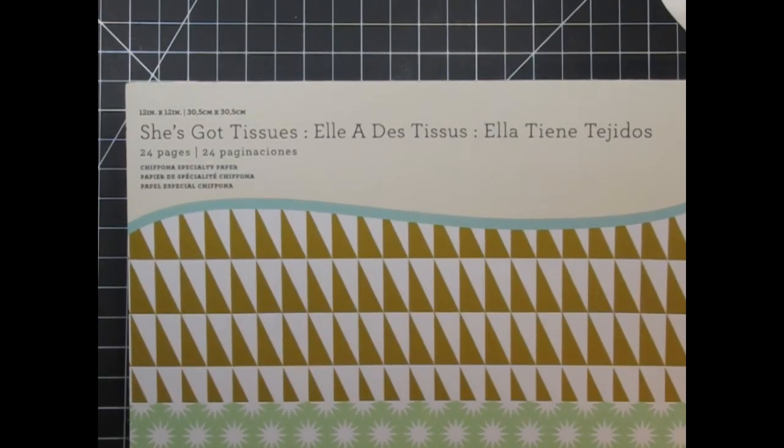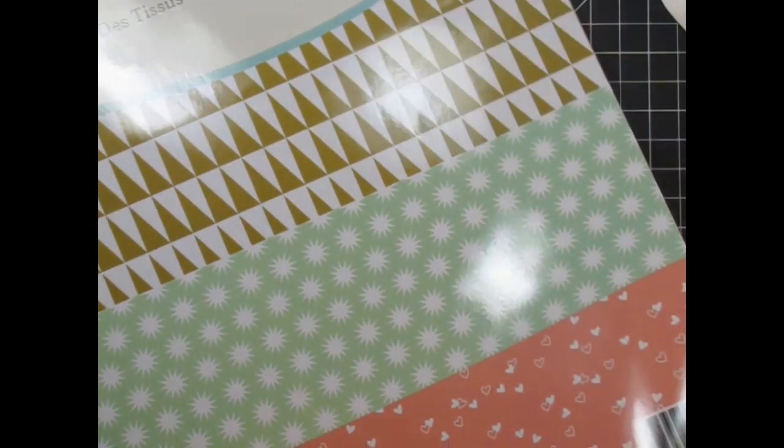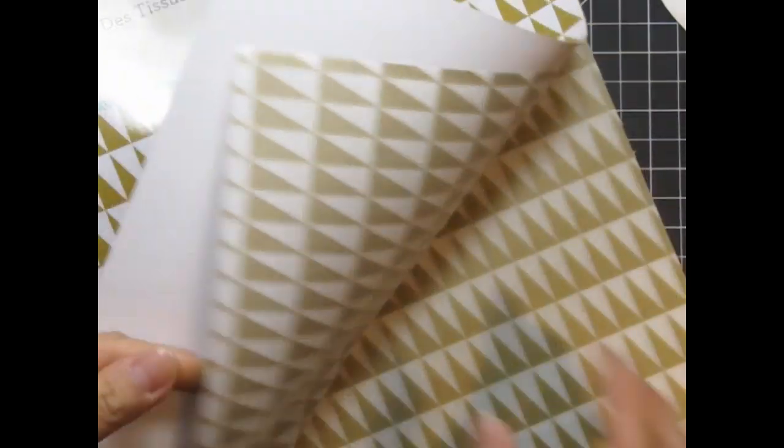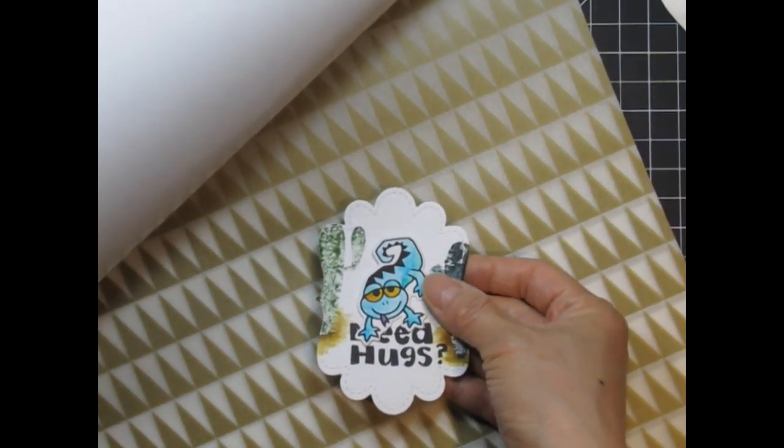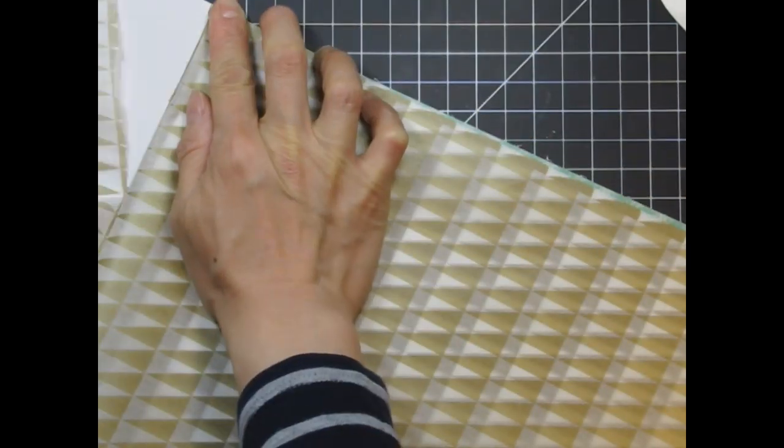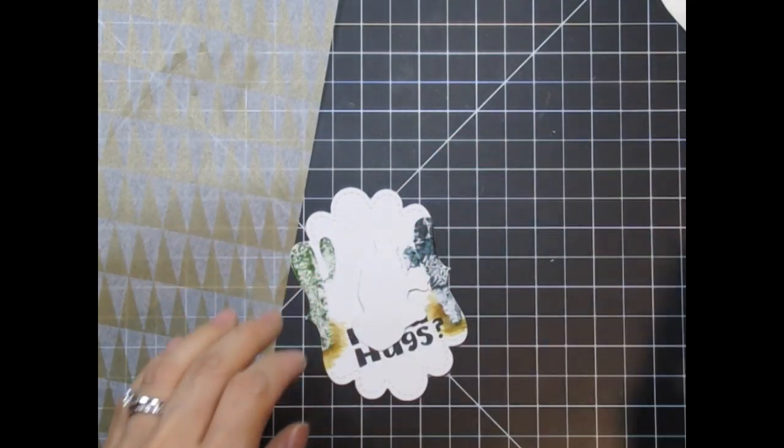Before assembling the card, I want to add a layer of interest between the card base and the Frame 1 die panel. I recently bought these new tissues by Cosmo Cricket. They are to die for. I love light materials like vellum, crepe, and now patterned tissues. I absolutely love these cacti gold triangles and thought it would work perfectly with the theme of this card.